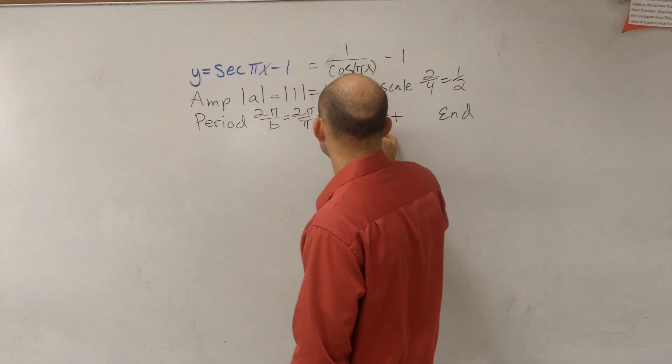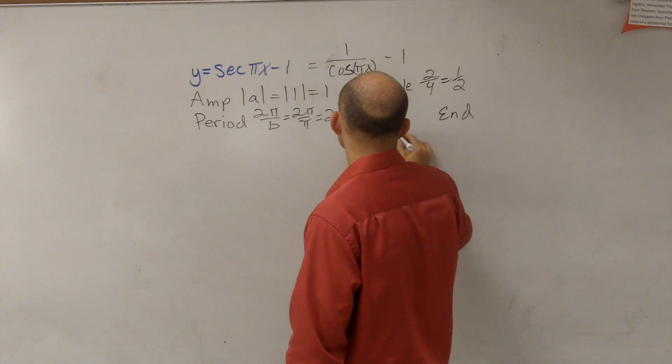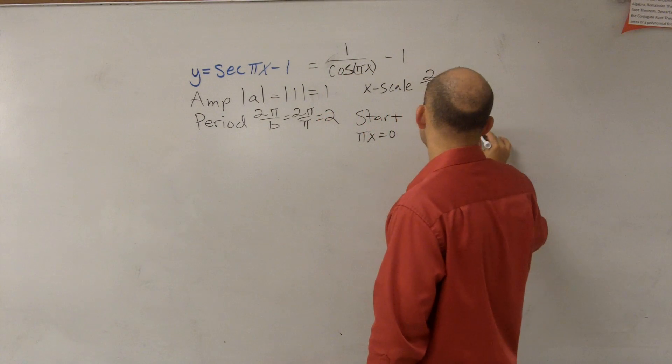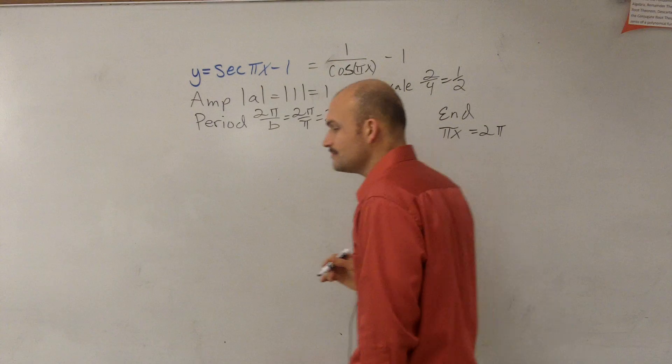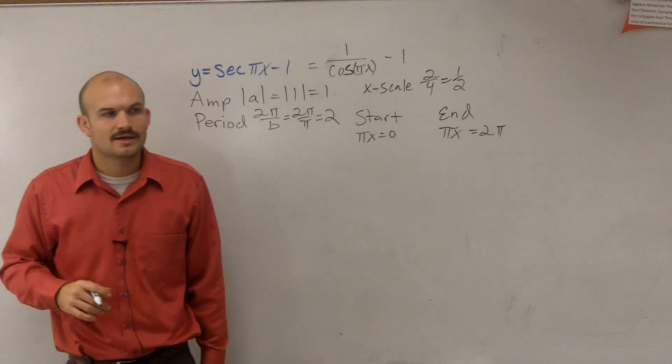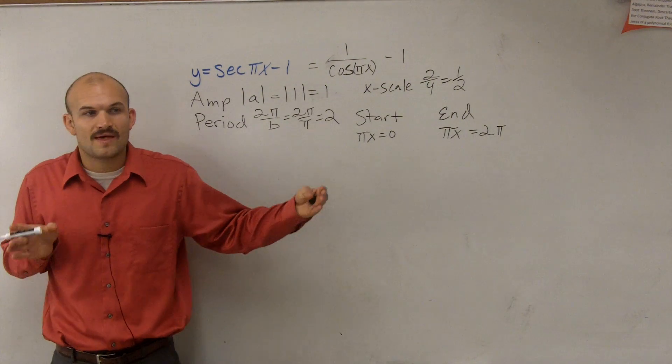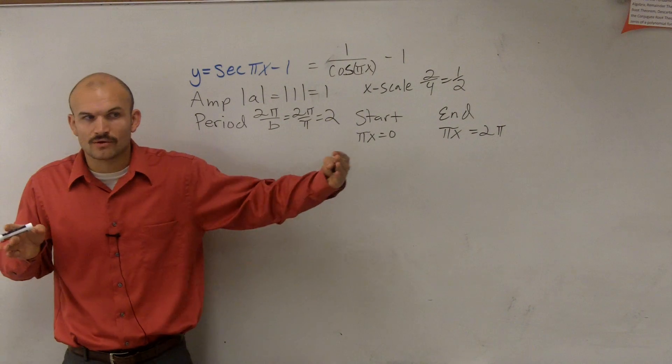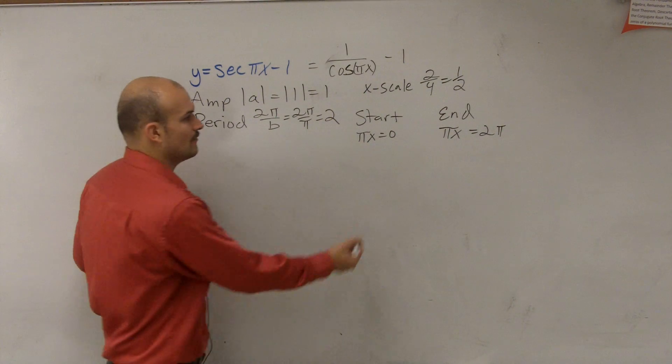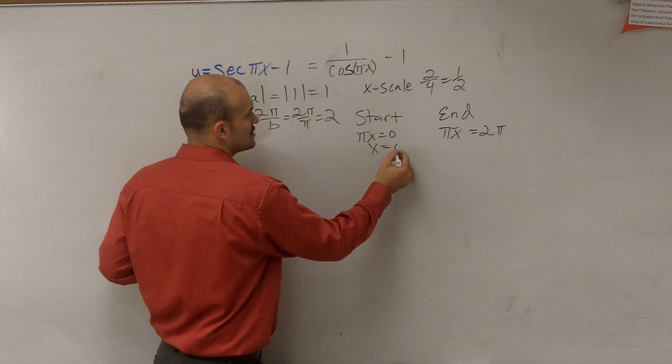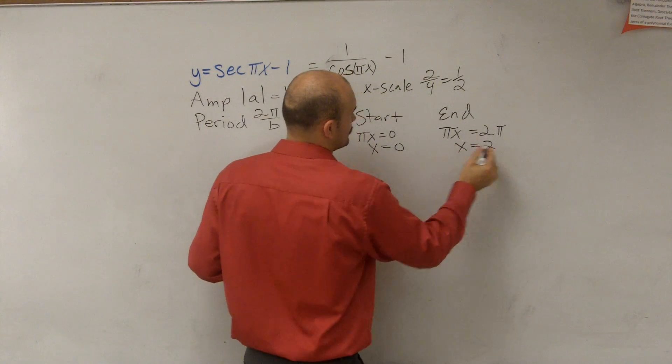So to find the start, what we do is we take what's inside of our function, and we set that equal to 0. And we set what's inside our function equal to 2 pi. And the reason we set it equal to 0 and 2 pi, because in our parent graphs, that was the initial period between 0 and 2 pi. So now we just solve for x. So we get x equals 0, and therefore, we get x equals 2.